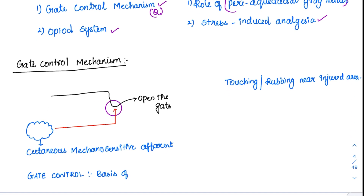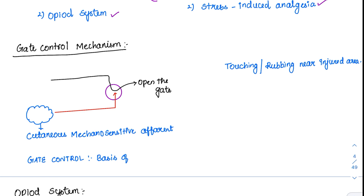The gate control mechanism happens at the spinal level. Whenever A-delta or C fibres are stimulated, they travel through the spinothalamic tract and are carried into the central nervous system — basically opening the gateway or pathway for pain.